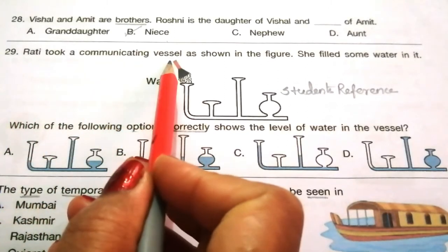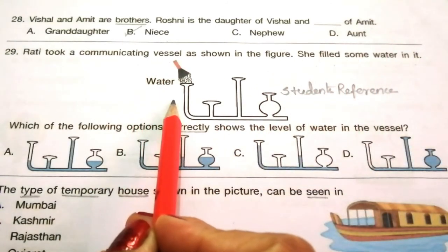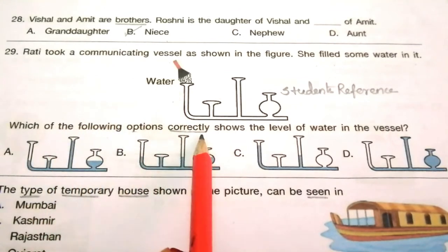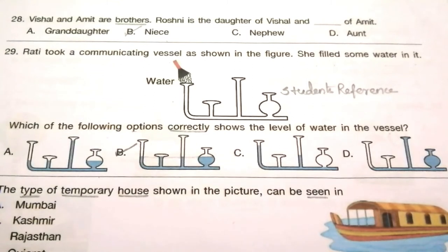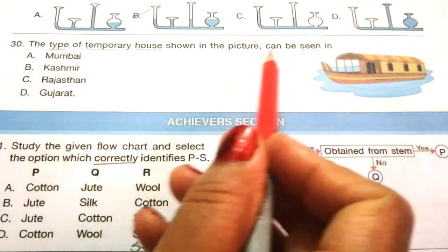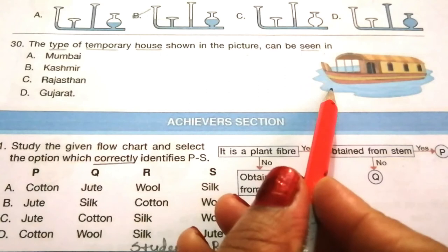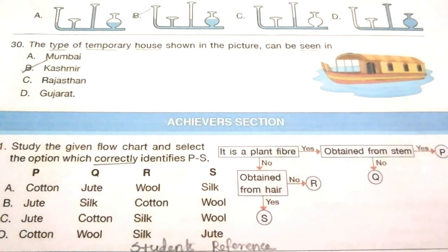Question 29: Rathi took a communicating vessel as shown in the figure. She filled some water in it. Which option correctly shows the level of water in the vessel? The answer is B. The water level is equal in all parts. This is a repeatedly asked question. Question 30: The type of temporary house shown in the picture can be seen in Mumbai, Kashmir, Rajasthan, or Gujarat. The answer is B, Kashmir.